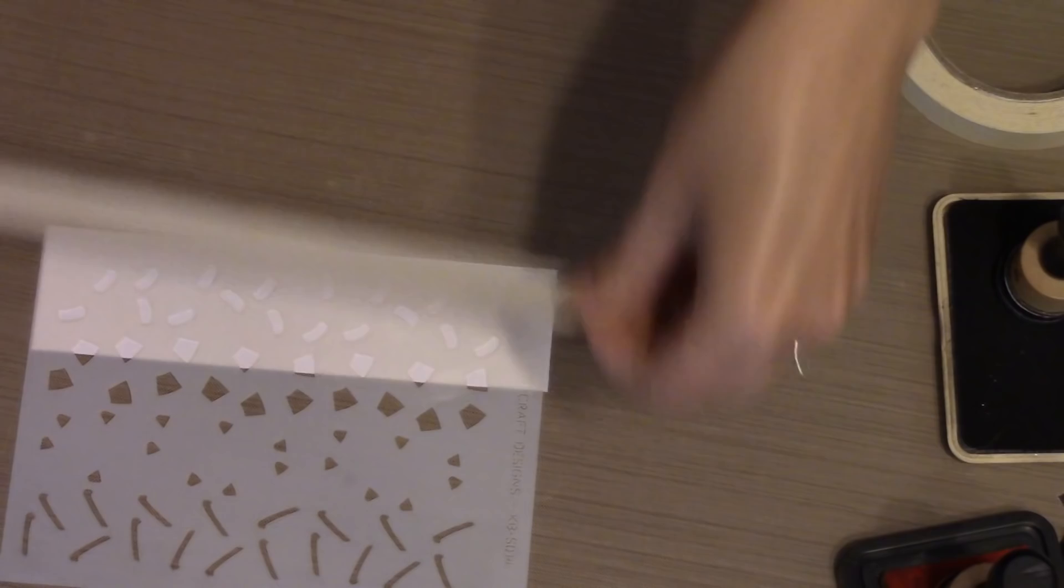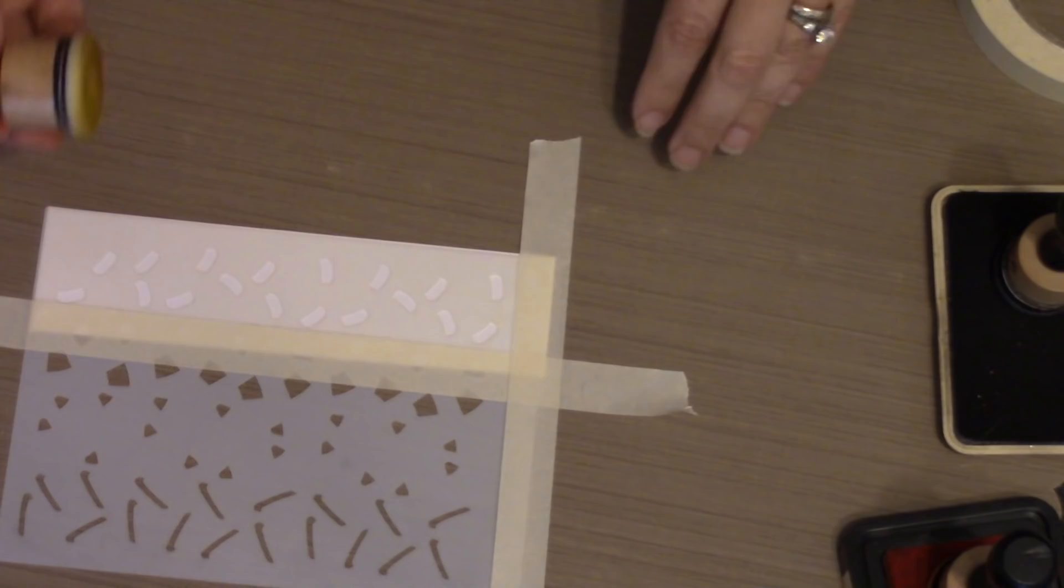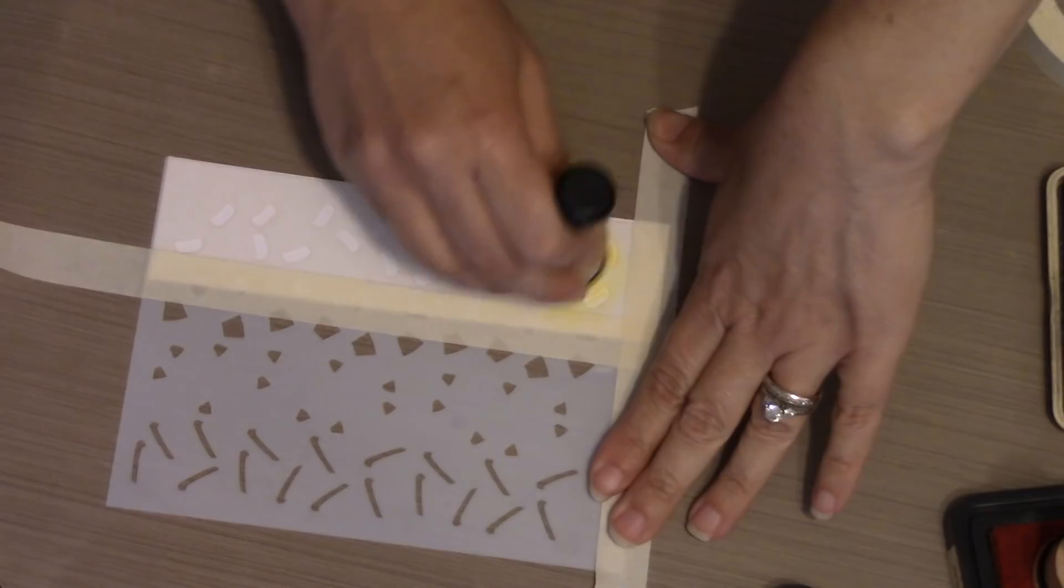It doesn't really matter what order you do these in, but it makes sense to me to just go from left to right, which means I start with the base of the candy corn. So I've taped it off and I'm going to use yellow with a blending tool. Typically on candy corn, the base is yellow. But if you were making Indian corn, then you would make this brown.